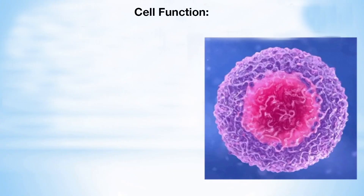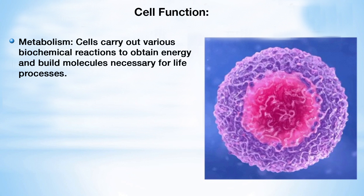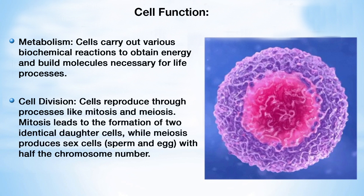Regarding cell function, cells carry out various biochemical reactions — this is called metabolism — to obtain energy and build molecules necessary for life processes. For cell division, cells reproduce through processes like mitosis and meiosis. Mitosis leads to the formation of two identical daughter cells, whereas meiosis produces sex cells — sperm and egg — with half the chromosome number.